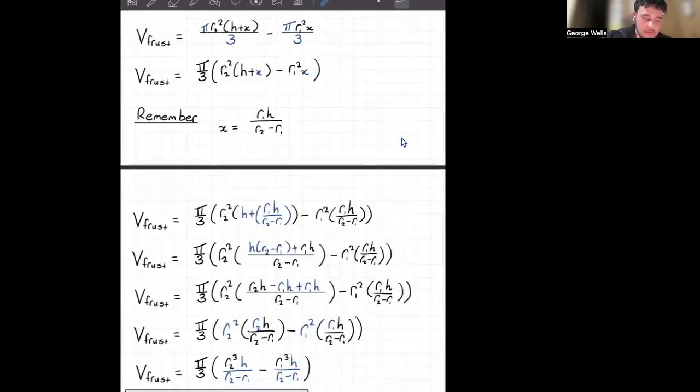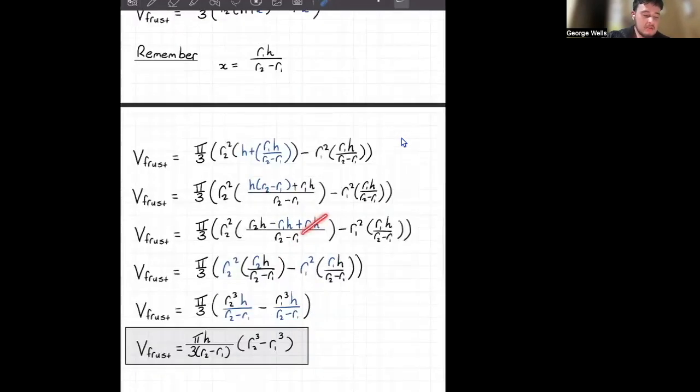It looks a bit messy, but we'll sort through it. All I'm doing from this line to this line is adding that fraction together to the h, which I'm then expanding the bracket to give us this, and then collecting the like terms. Those cancel out.